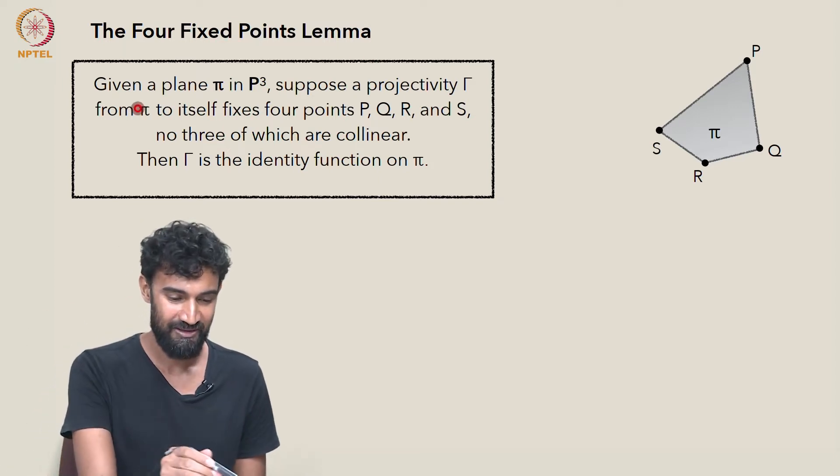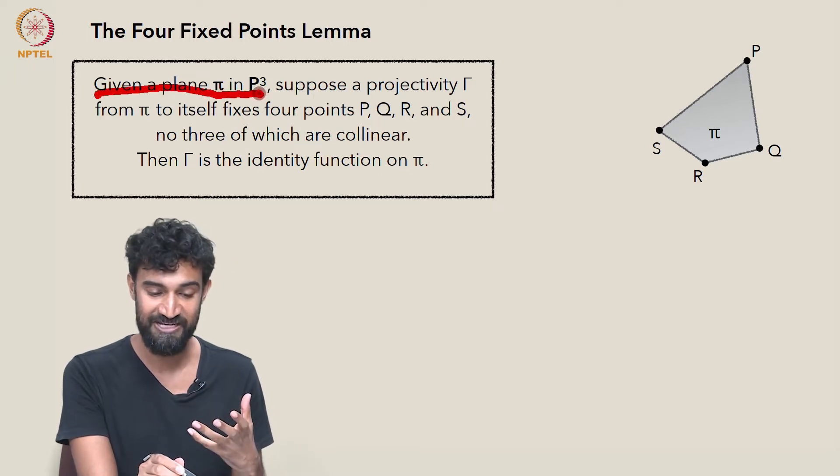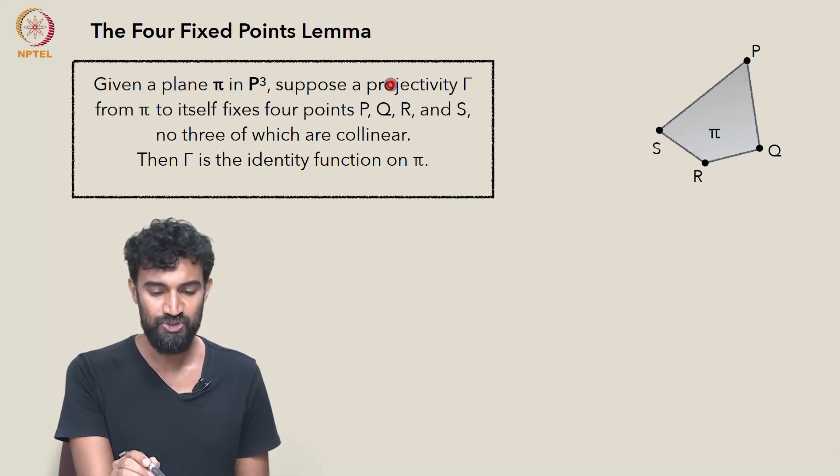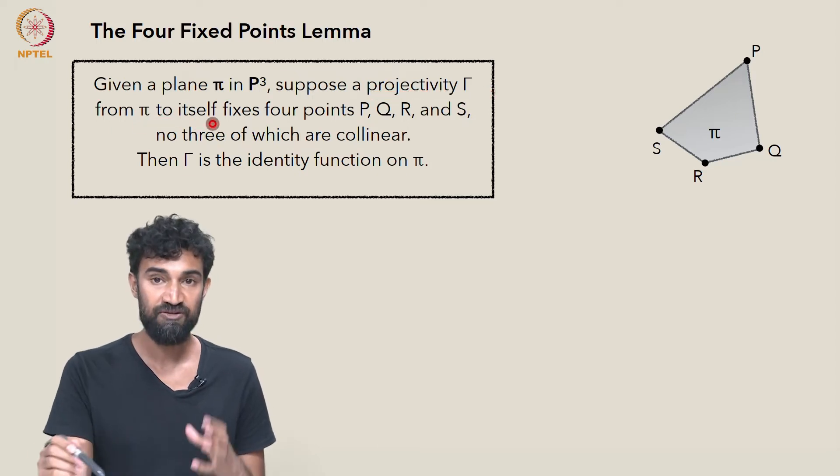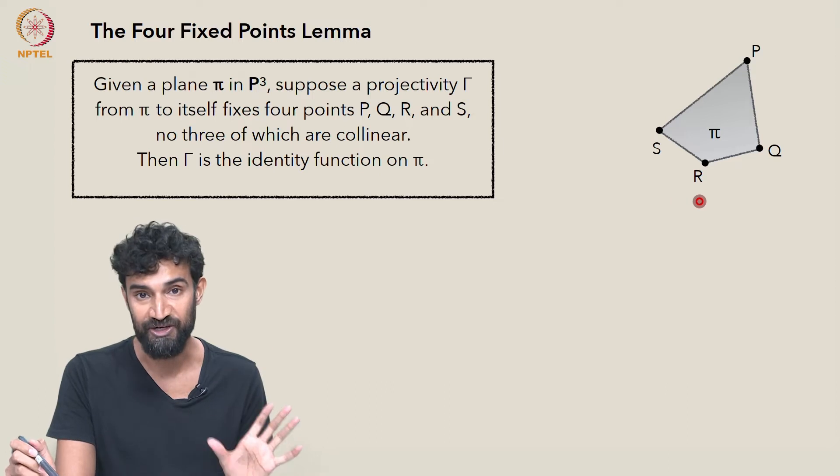Now the lemma states the following. Given a plane π in P³, suppose we have a projectivity γ from π to itself which fixes four points P, Q, R, and S, no three of which are collinear.